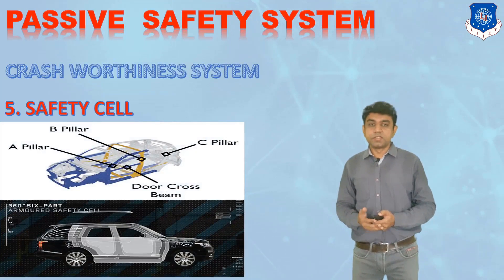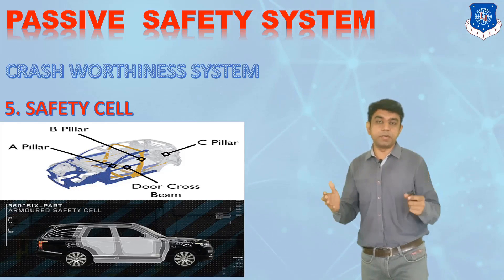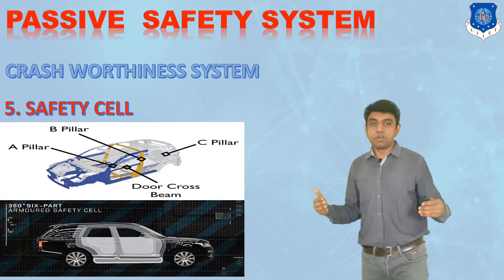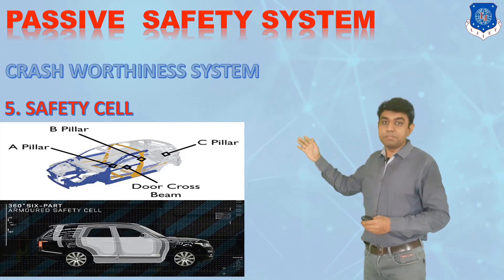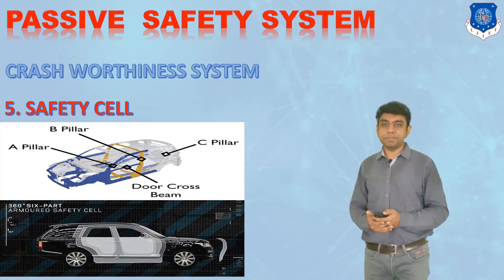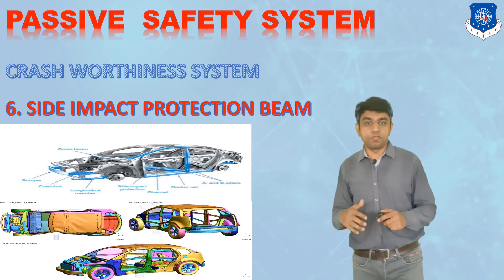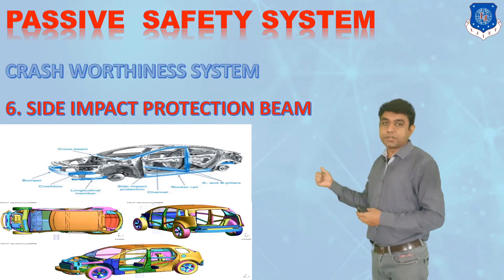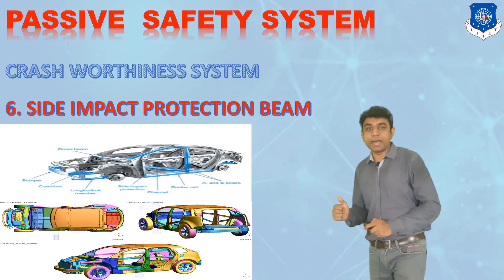The fifth one is the safety cell. The car body is designed so that certain cross members or pillars safeguard the occupant inside. Whenever force comes from any direction due to an accident, less impact is received by the occupant. The A, B, and C type pillars as well as the door cross beam all constitute the safety cell of the vehicle. The sixth one is the side impact cross beam — made of very heavy material so that during a side impact, the transmission of force to the occupant is minimized.